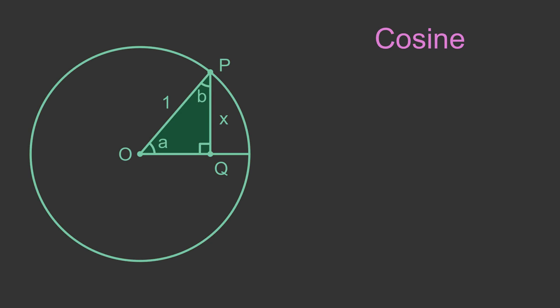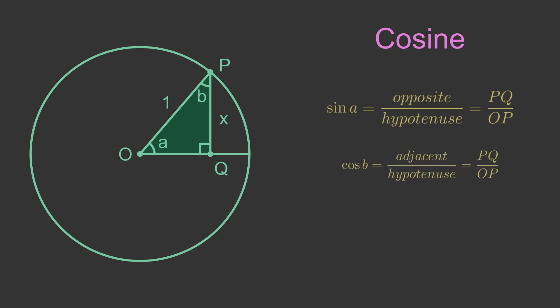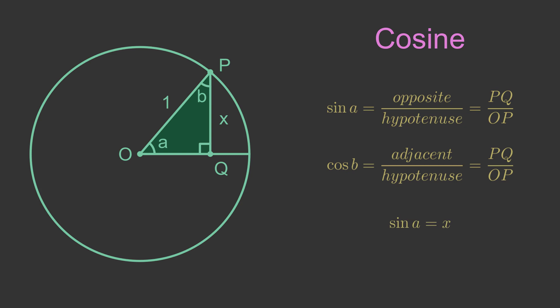This is the diagram we used before to illustrate the sine function. This time we will add the complementary angle B. We have previously seen the equation for the sine function, opposite over hypotenuse, which is PQ over OP. The cosine function applies to the same sides PQ and OP, but this time it relates them to angle B. Cosine B is adjacent over hypotenuse, which is also PQ over OP. This is because the side PQ is opposite angle A, but adjacent to angle B. To be clear, the value of sine A tells us the length PQ, which we call X, in terms of angle A. The value of cosine B also tells us the value of X, but in terms of angle B.